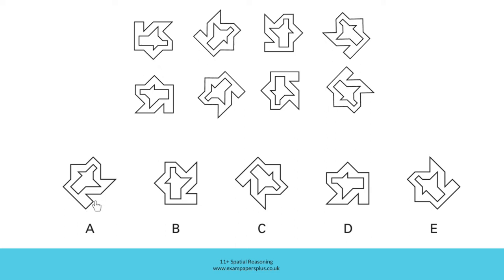In option A, for the figure to be in this orientation, it would need to look something like this. But as you can see, this is the wrong way round. Consider that narrow section and the wider section. That's because option A is in fact a reflected version of the figure. If the figure was in this orientation and we used a vertical mirror line to reflect it, A would be the result.